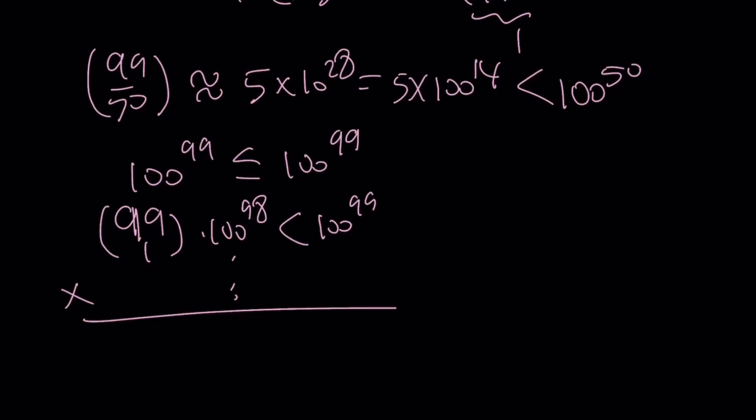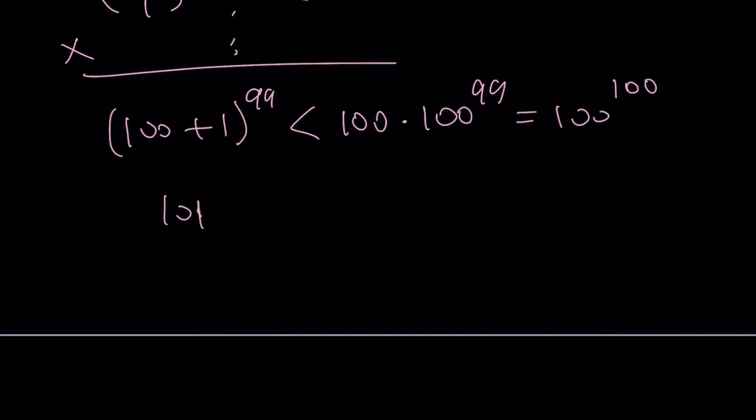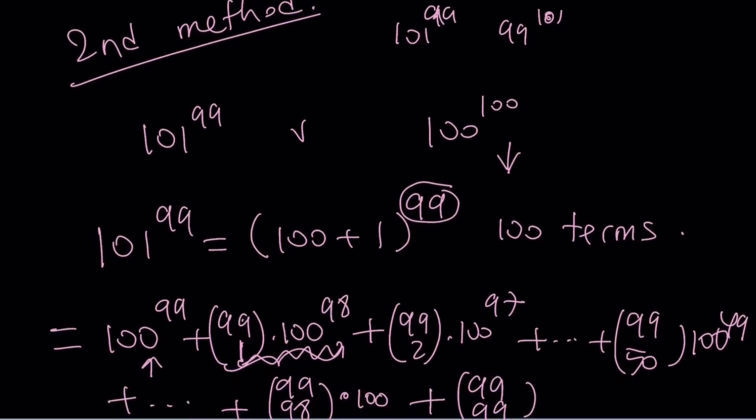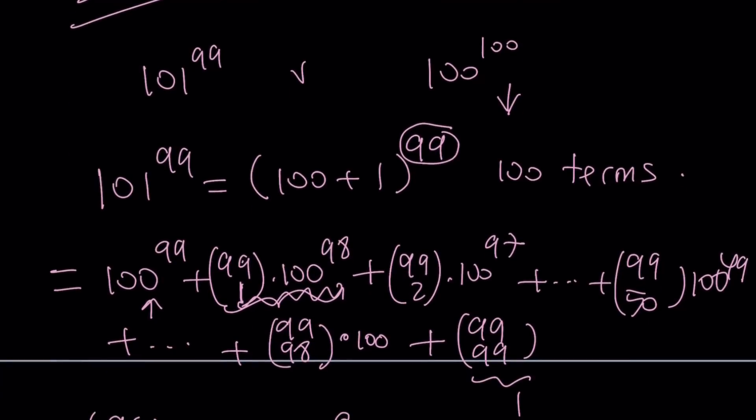From here, we're going to be getting 100 plus 1 to the power of 99, with 100 terms, is actually going to be less than 100 times 100 to the power of 99, because each of these is less than 100 to the power of 99, and this is equal to 100 to the power of 100, which tells you 101 to the power of 99 is less than 100 to the power of 100. Therefore, our larger number is going to be this one.